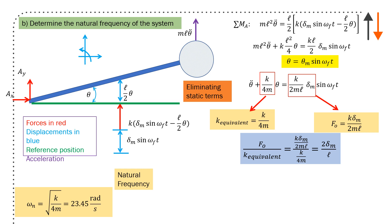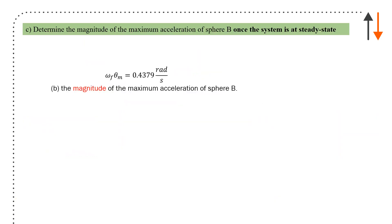You get the natural frequency for the system, which is square root of k over 4m. Remember, you're setting up one equation, making it look the way it's supposed to, and once you've done that, use the definition. Omega_n squared for the system is 550 rads per second squared—that's the square of 23.45 rads per second. Magnification factor is F_0 over k equivalent over 1 minus omega forcing over omega_n, which equals 1.93. To determine the maximum acceleration once it's at steady state, you have omega forcing times theta_m, which is 0.4379 rads per second. By definition, consider the length of the arm, and you end up with 1.71 meters per second squared.